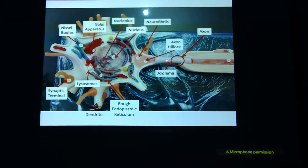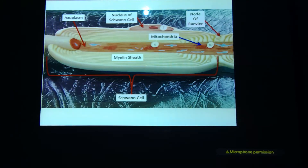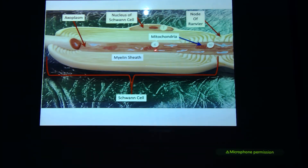This is the axon — the surface of the axon. The membrane of the axon is going to be the axolemma. Why? Because they have to make everything complicated. Looking at the axon that has been cut open, you've got the axoplasm — the gooey inside of the cell.